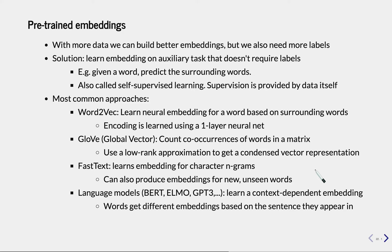The first well-known method is Word2Vec. We have a sentence like 'the cat sat on the mat', hide the word 'cat', and ask the model to predict the missing word. We use a very simple one-layer neural net for that, and afterwards, once it's trained, we use the weights of that network as the embedding for every word, for instance the word 'cat'.